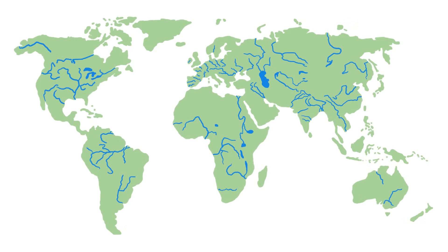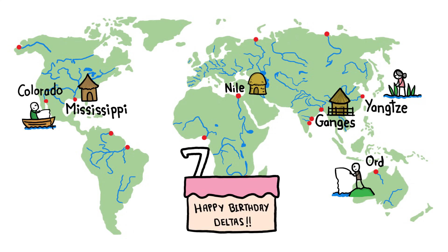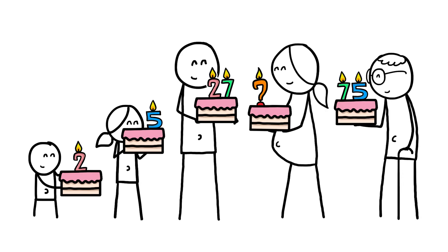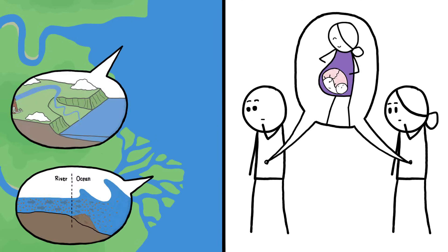Thus, the world's great outie river mouths — the fertile deltas like the Nile and the Yangtze that have helped foster human civilization since its birth — all came into being at just about the same time. The same can't be said for all of the world's outie bellybuttons. What can be said, though, is that innies and outies, for both rivers and people, are a small record of how we came to be.